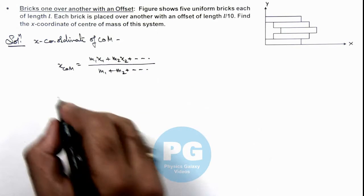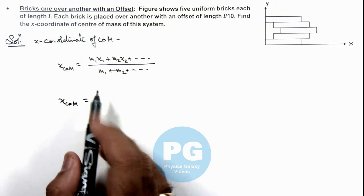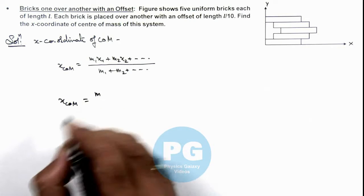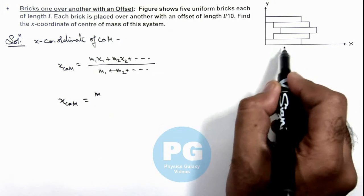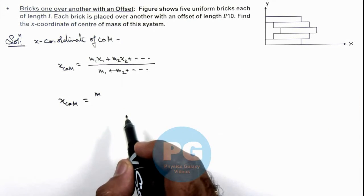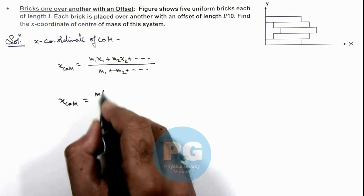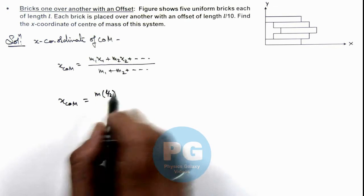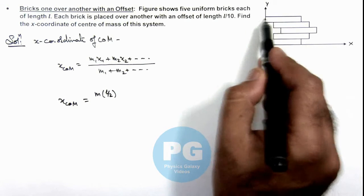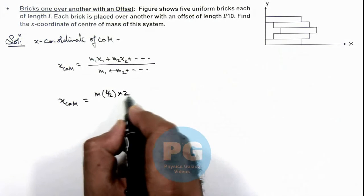So in this situation if we calculate the x-coordinate of center of mass, the mass of each brick is taken as m. Then for the first brick we can see the center is located at a distance l by 2. So we can write m multiplied by l by 2 for x1. Similarly for the topmost plate also, the value of mx will be m l by 2, so we can multiply it by 2.